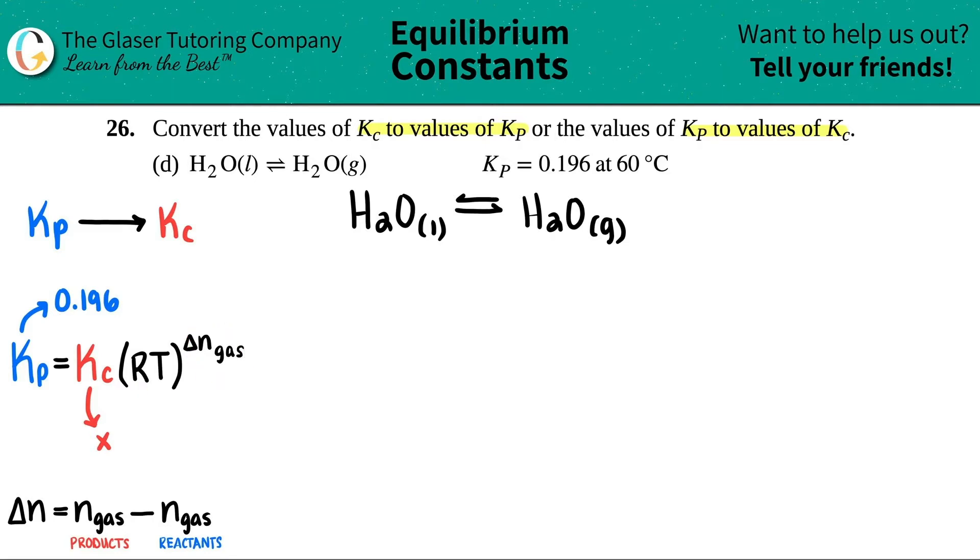And now we should know the RT and the delta n gas. Let's start with the R value. The R value is the universal gas constant. It's a constant value. If you're using this formula, the R value is always going to be 0.0821. We use this number anytime that we're dealing with pressures. We use 8.314, which is another R value, if we're using energy. Since it's not talking about energy here, it's the 0.0821.